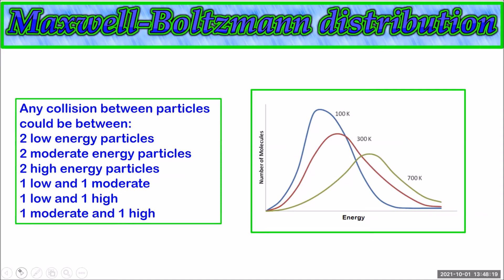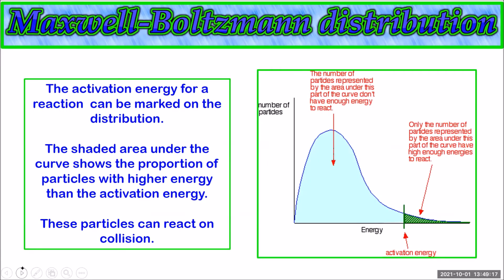Looking at collisions in this sample, you could have a collision between two low energy particles, two moderate energy particles, two high energy particles, or combinations such as one low and one moderate, one low and one high, or one moderate and one high — so there is a range of sums of kinetic energies of colliding particles. The activation energy for a reaction can be marked on this distribution. The particles beyond this line have enough energy to react — that shaded area represents the particles that can react — while the particles in the blue region before it don't have enough energy and would just bounce off each other without reacting.